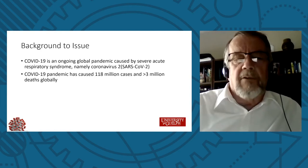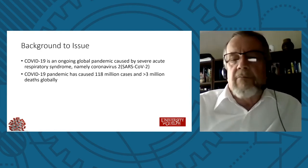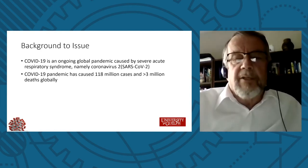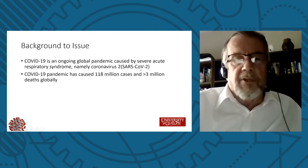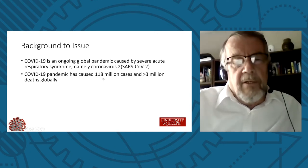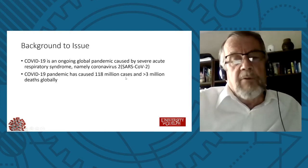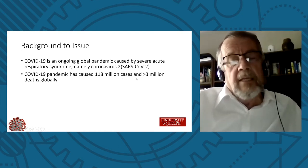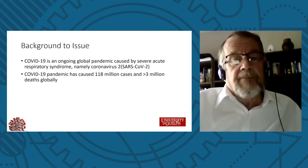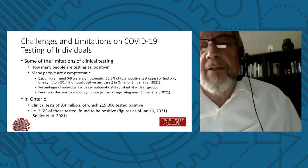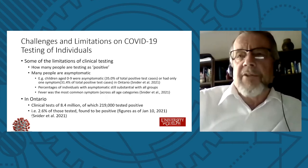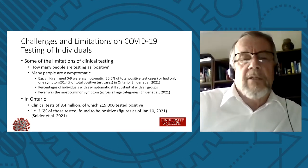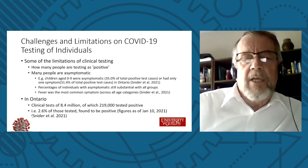We have an ongoing global pandemic caused by severe acute respiratory syndrome coronavirus 2. It has caused 118 million people to be infected — a number now substantially updated — and 3 million deaths globally. So, challenges and limitations in terms of testing of individuals: how much information have we obtained and how do we obtain it?